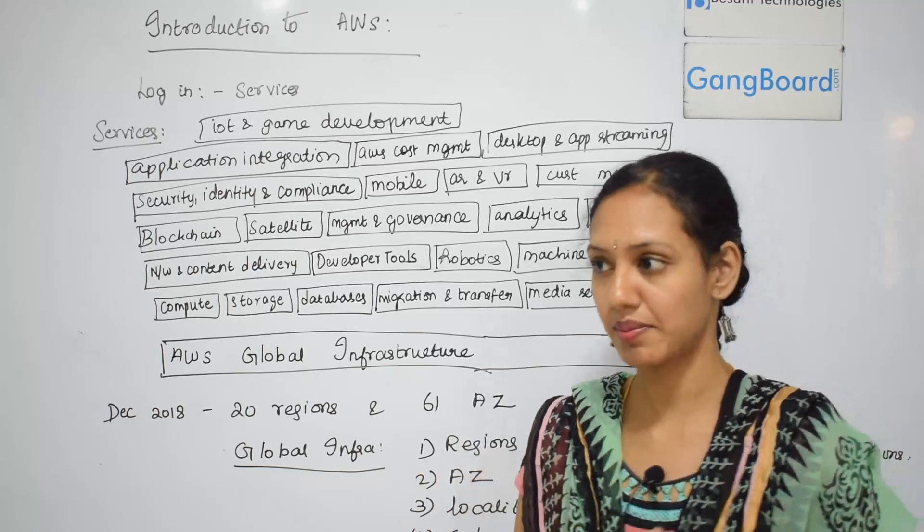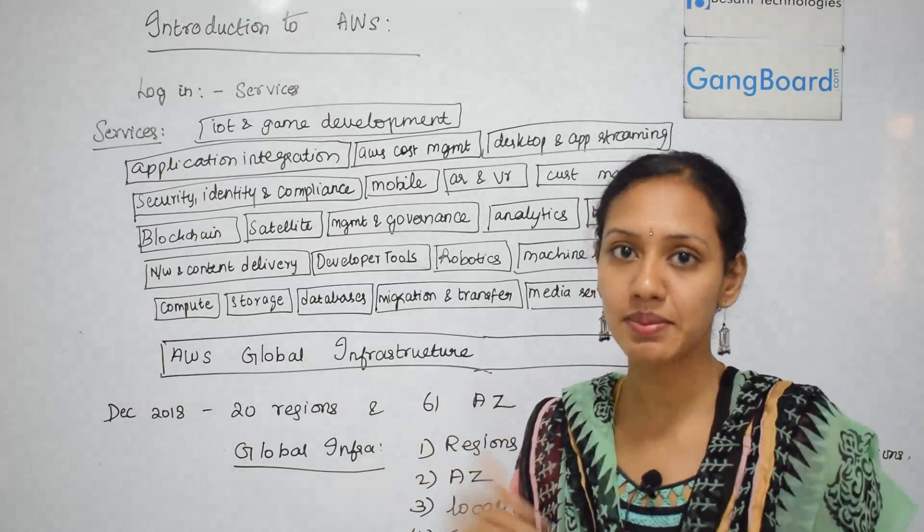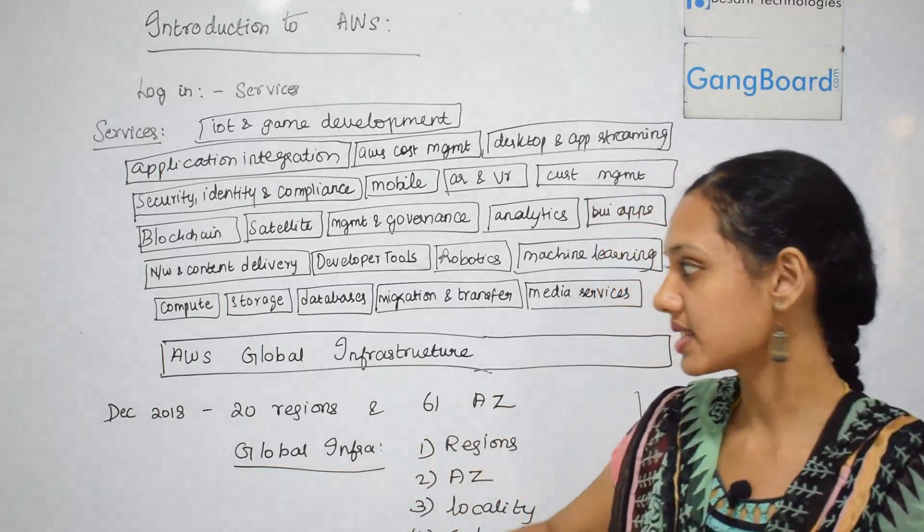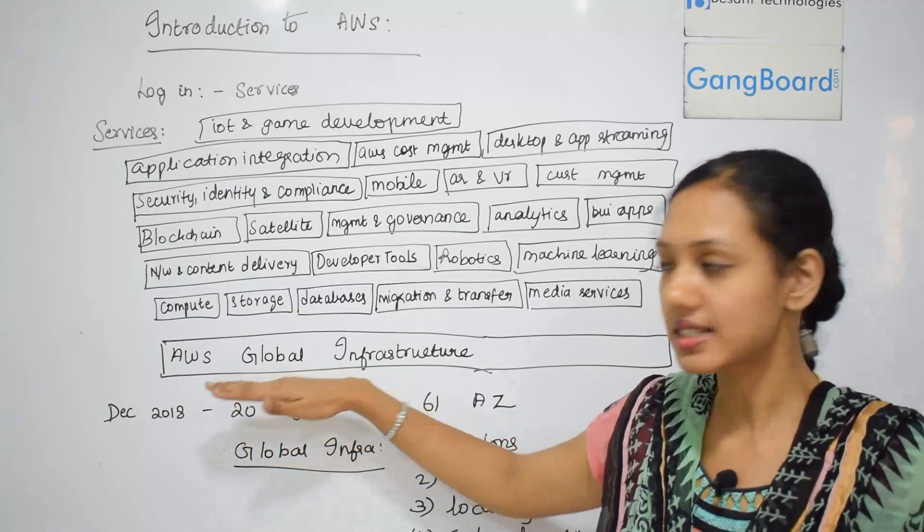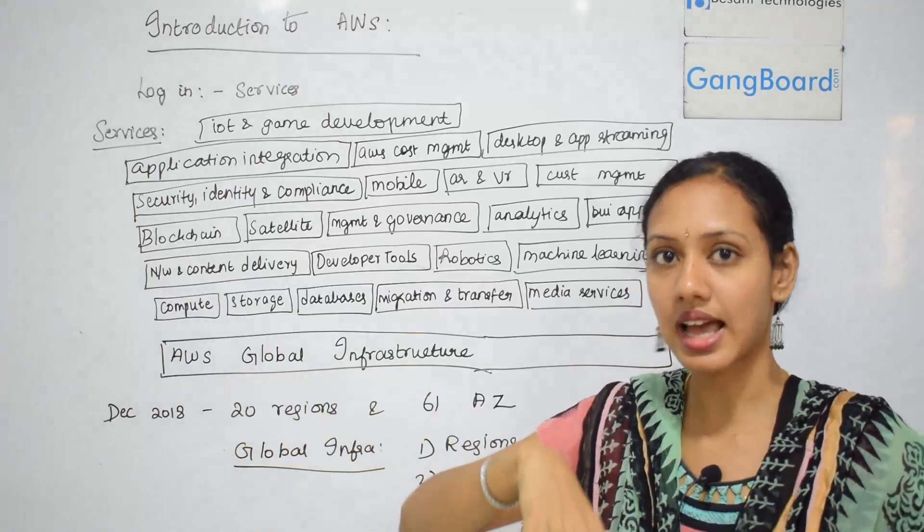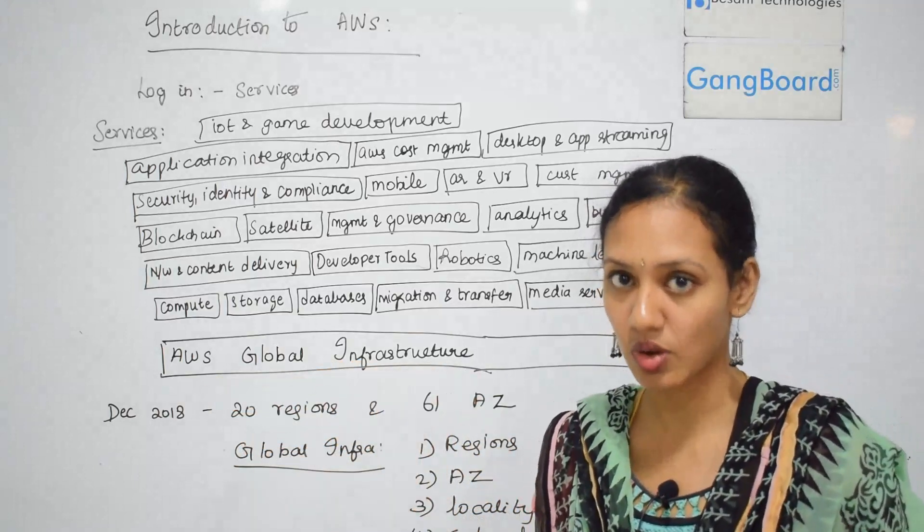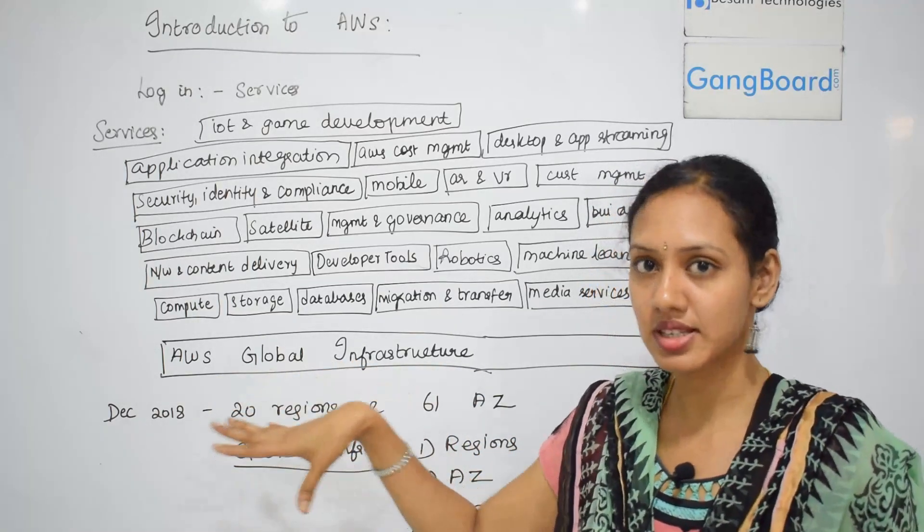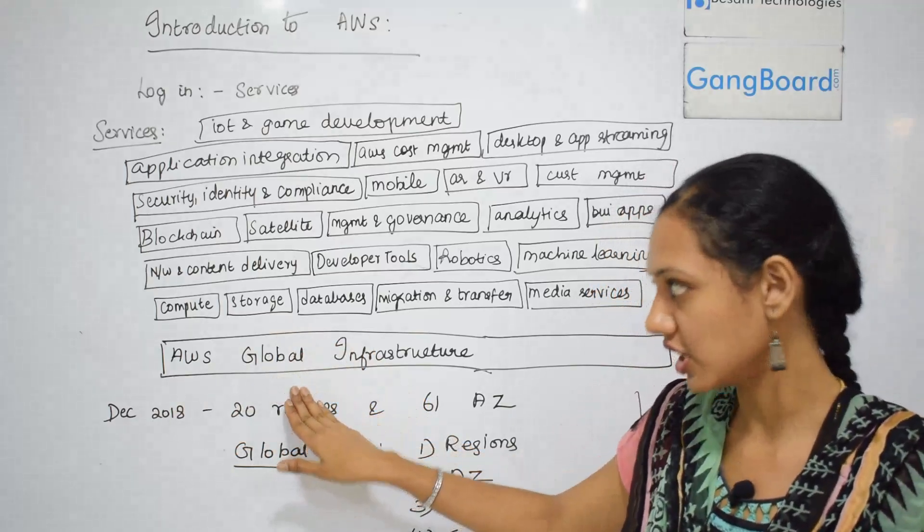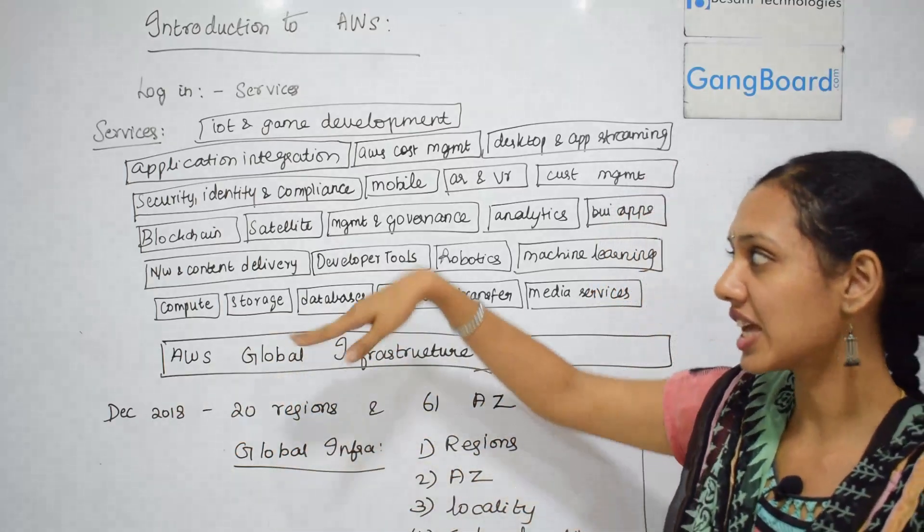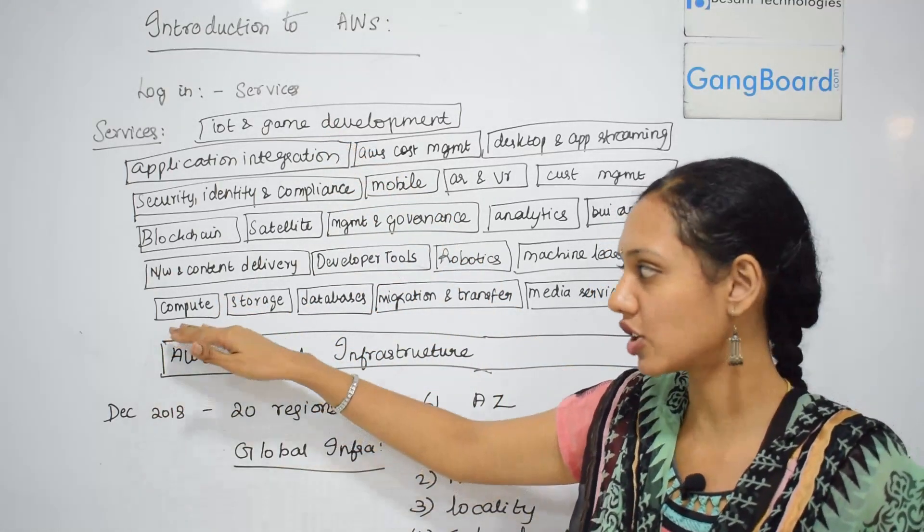Let me tell you what are the main services available in AWS. The first thing is the AWS global infrastructure, which is the regions and the availability zones around the globe on which AWS is based. On top of it, we have various services. These are not all the services, just the main topics.